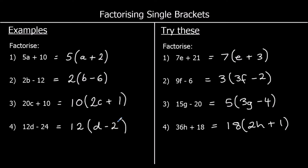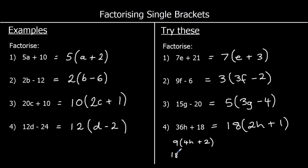If you had taken a smaller number outside — say 9 — you'd write 9 times 4h is 36h and 9 times 2 is 18. You can notice that you could take a 2 out again. So taking 2 outside doubles the factor to 18 and halves the inside term to 1. This is why we always want the biggest possible factor.